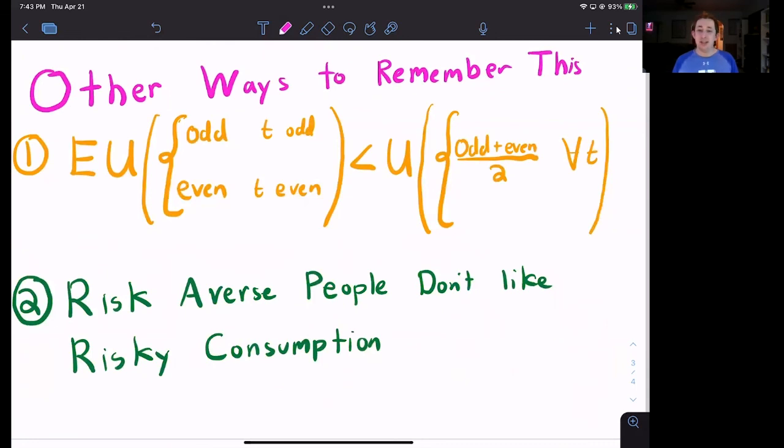Another way to think about it is if you think about risk aversion, you can think that, well, risk averse people which have strictly concave utility functions don't like risk consumption. If you're risk averse, then you don't like risk. So you don't want to have risky consumption that could be low or could be high. You want that nice guaranteed amount every period, even if it's less than what you could consume in the high periods. So these are some other ways to remember consumption smoothing.